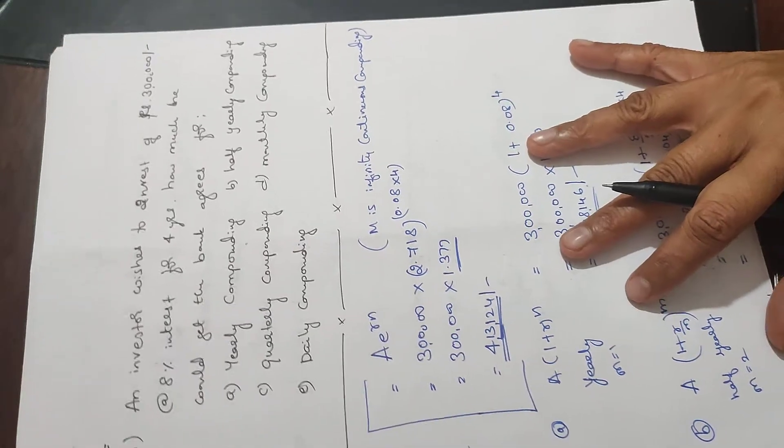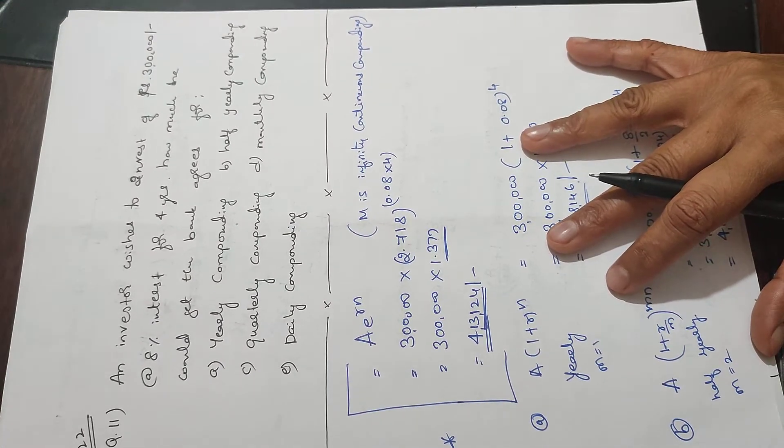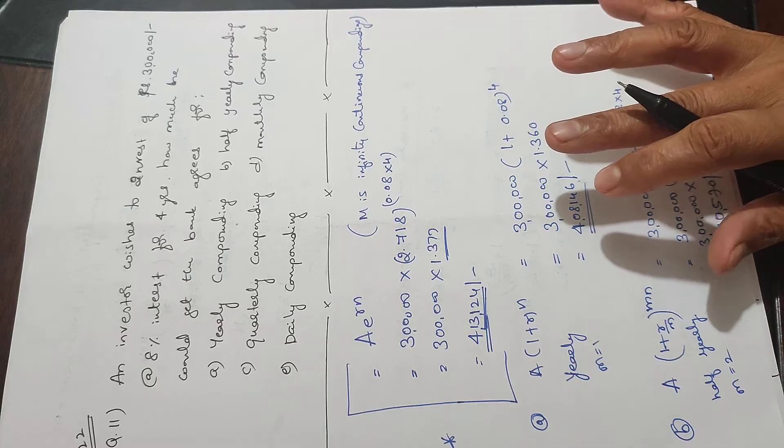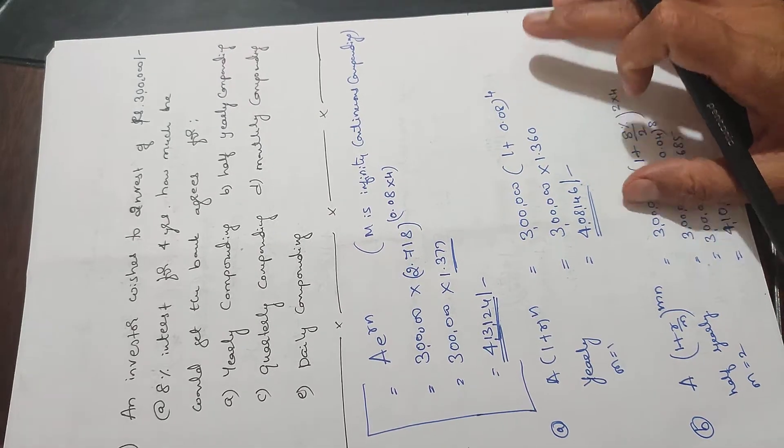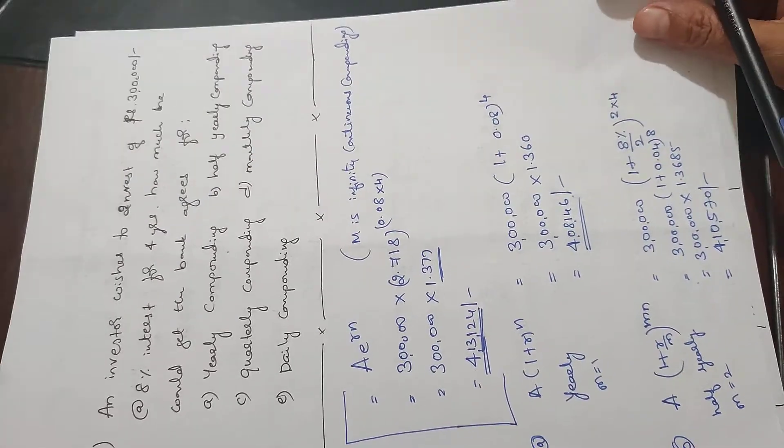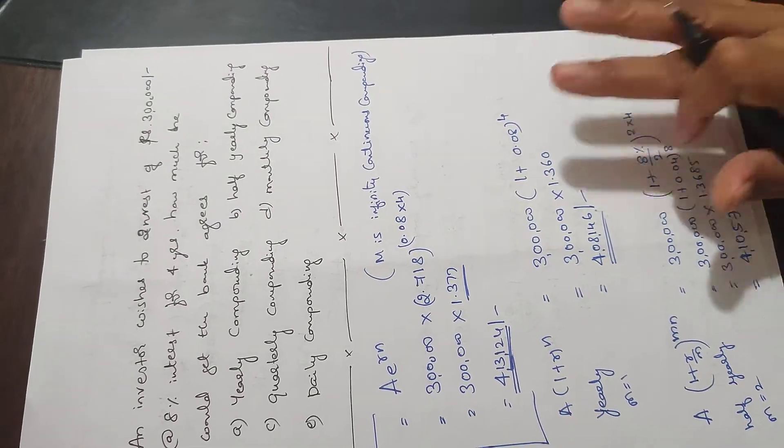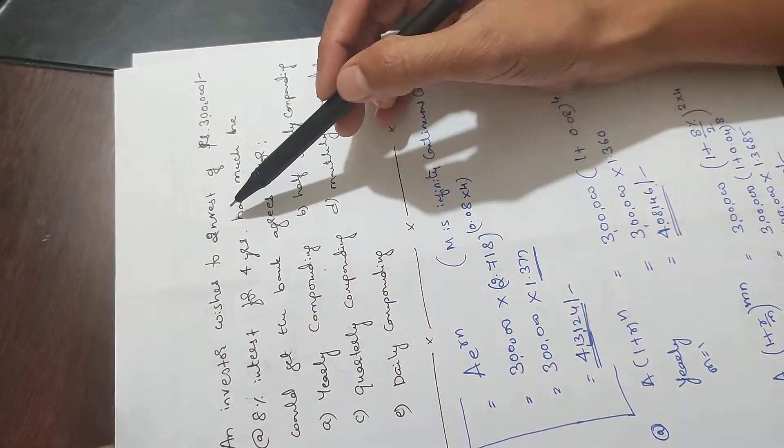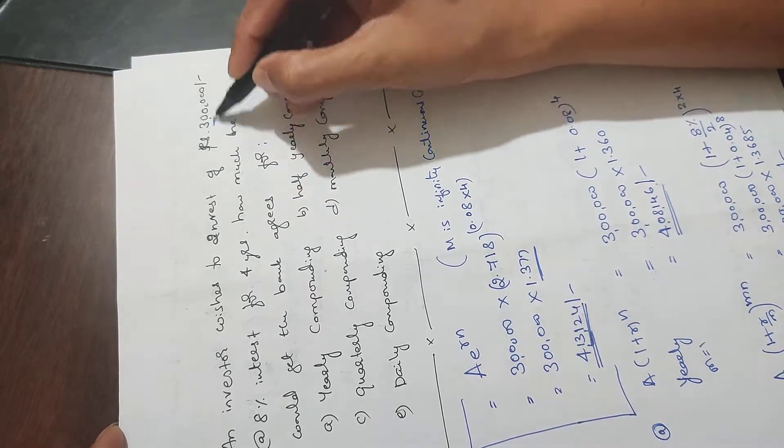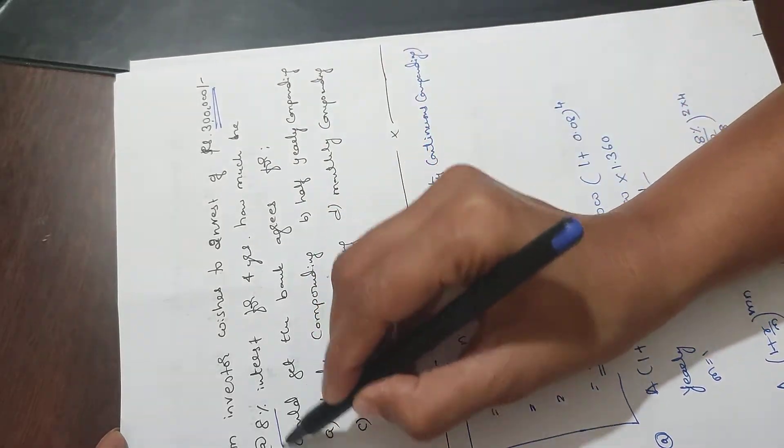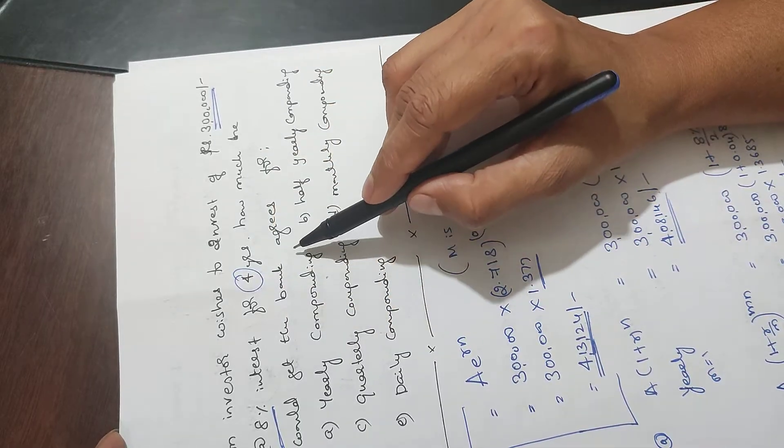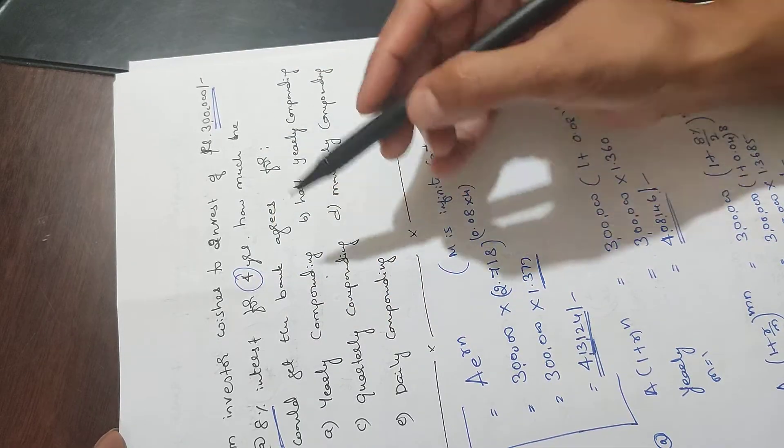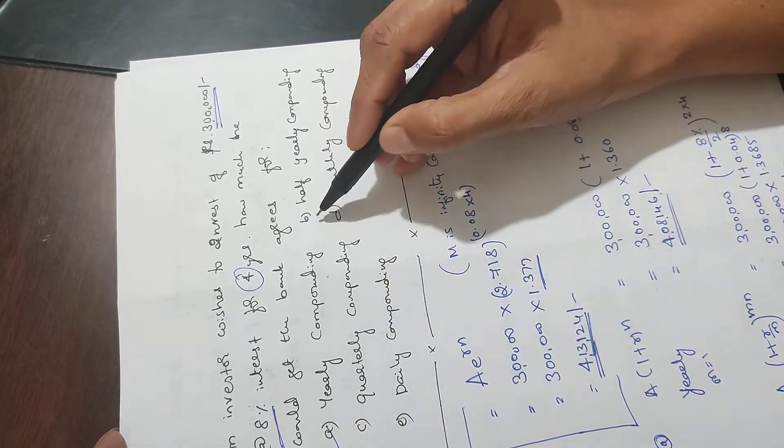Hello friends, this is about derivatives and financial courses. I will ask you a question about 3 marks or 5 marks. An investor wishes to invest 3 lakh rupees at 8% interest rate for 4 years. How much could he get if the bank agrees for yearly or half-yearly?